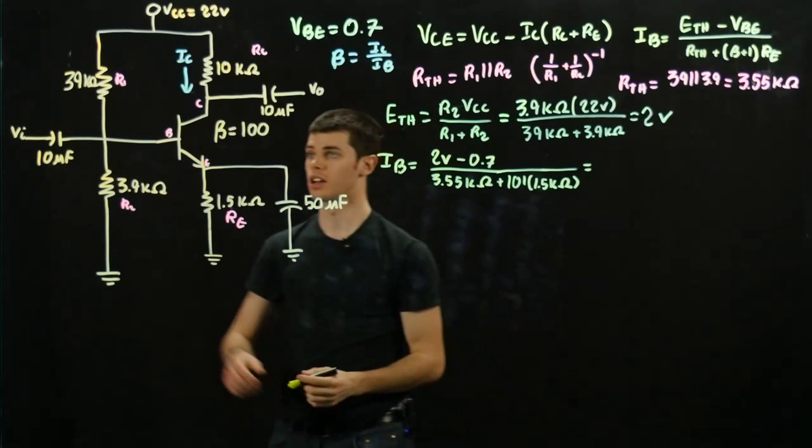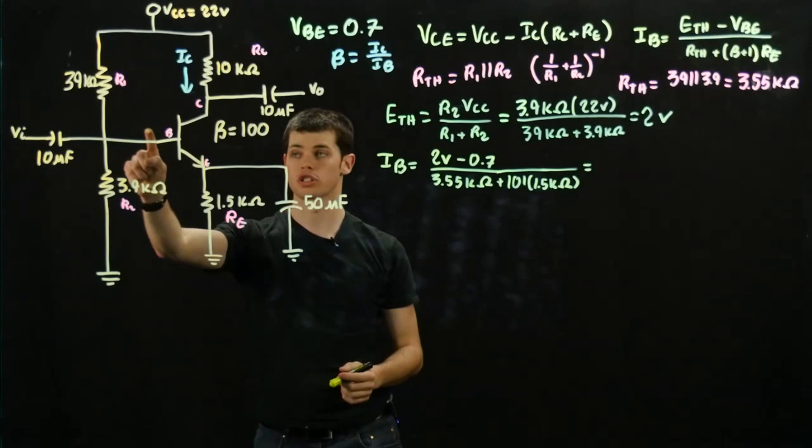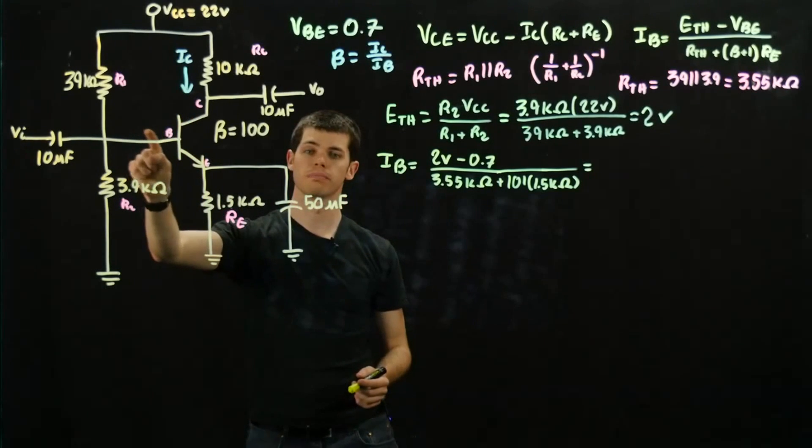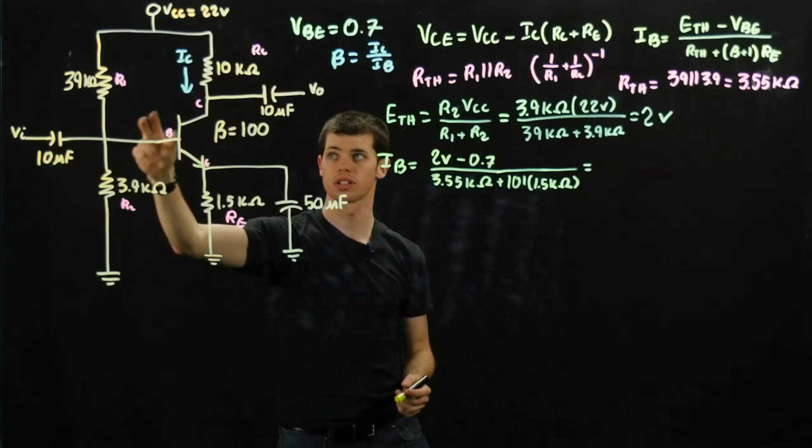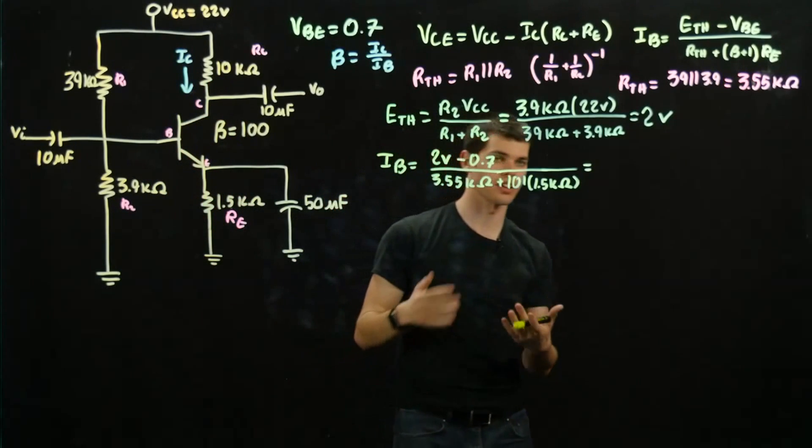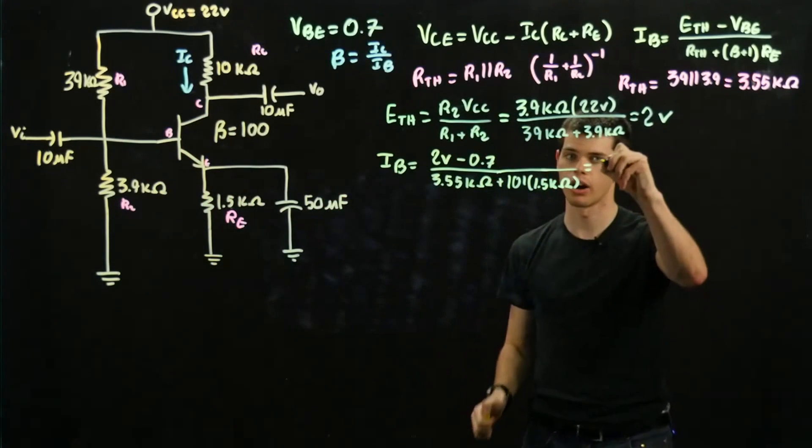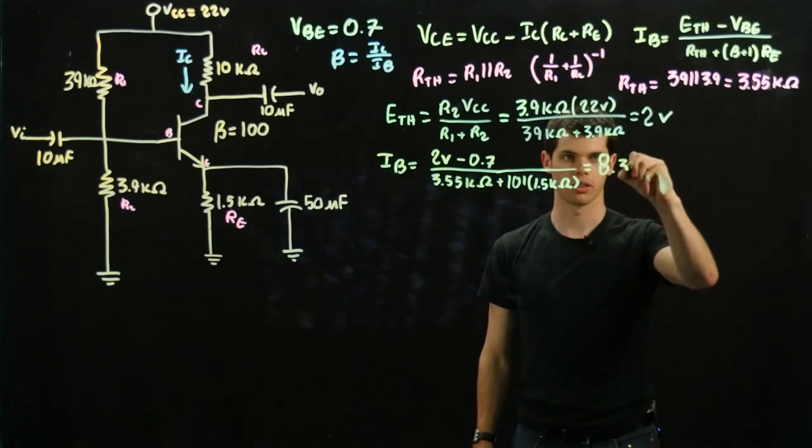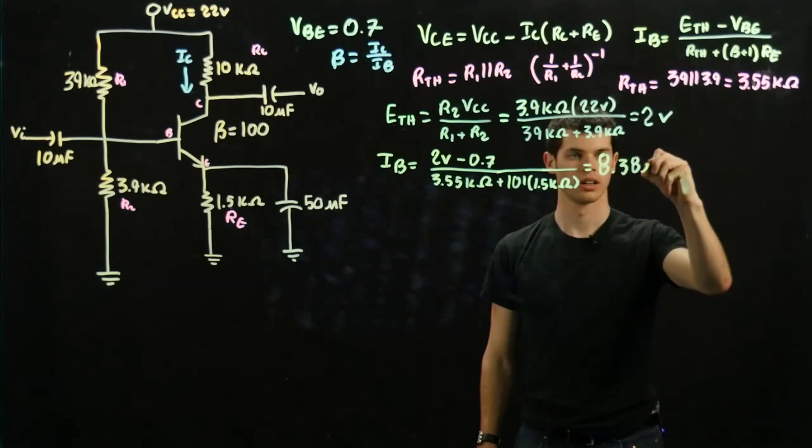Just to explain this, IB is generally smaller, so you're going to be dealing with milliamps here and this is going to be microamps. So if you're reaching microamp values here and milliamp values here, that's a general indication that you're doing the problem right. Not always, but it's usually a safe bet. So for this case, it's 8.38 microamps.